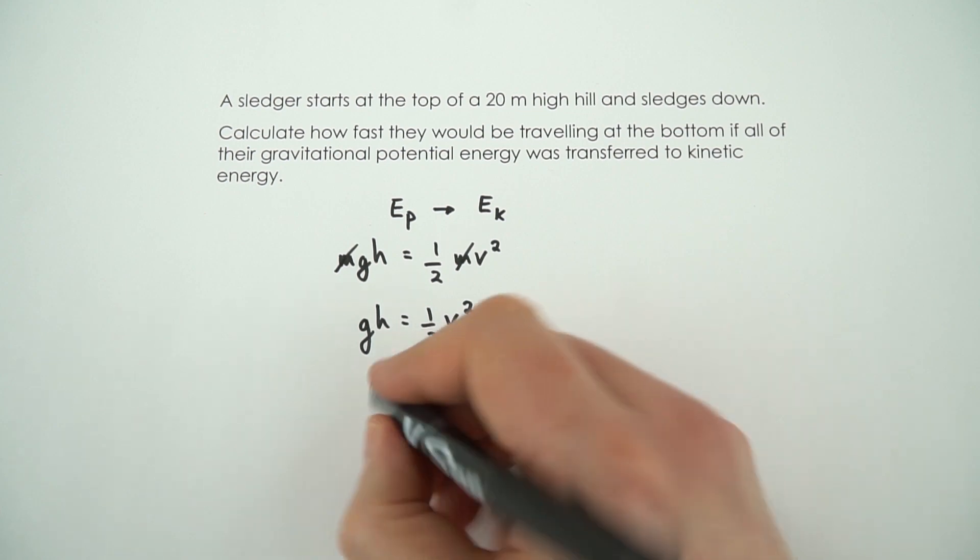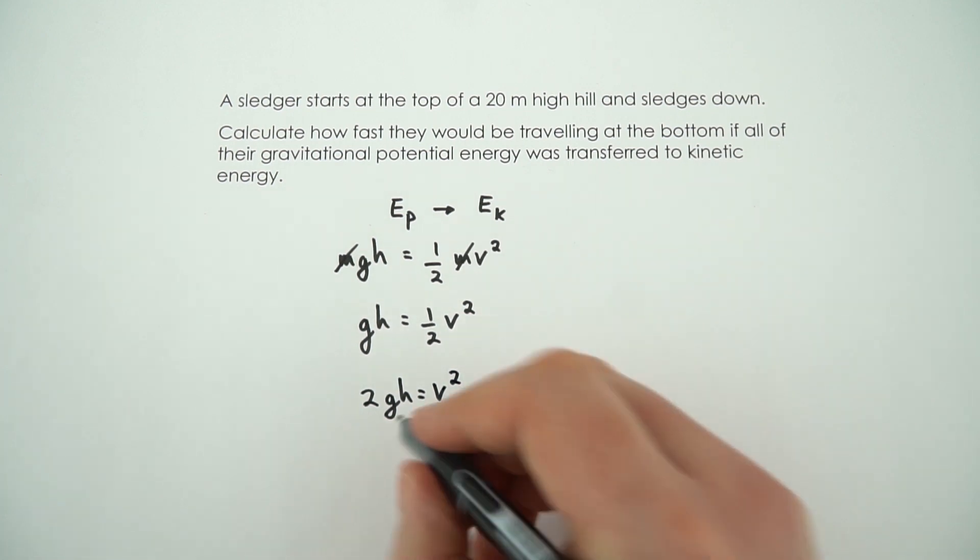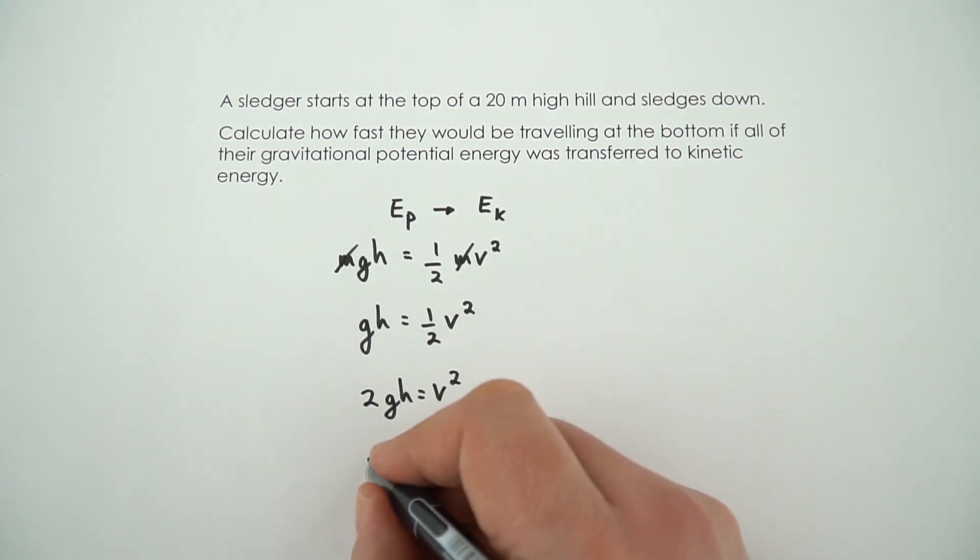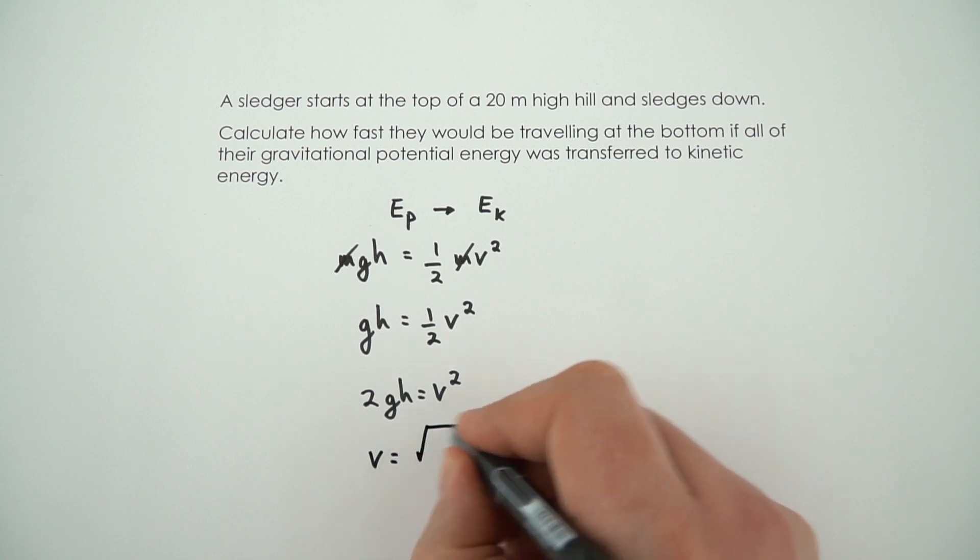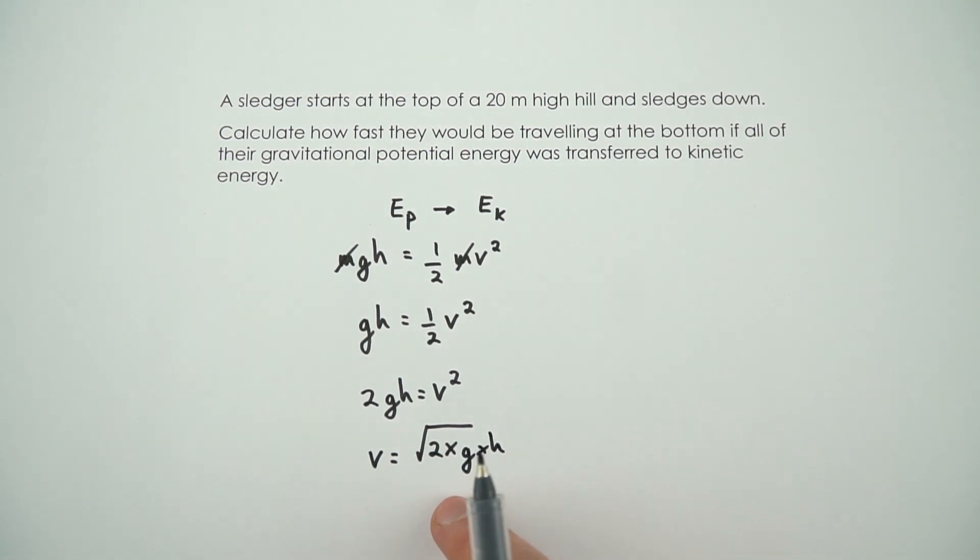So we can do that by multiplying both sides by 2 to say that 2gh is equal to v squared. And that means that we can square root both sides to say that v is equal to the square root of 2 times g times h. So that's the equation we need.